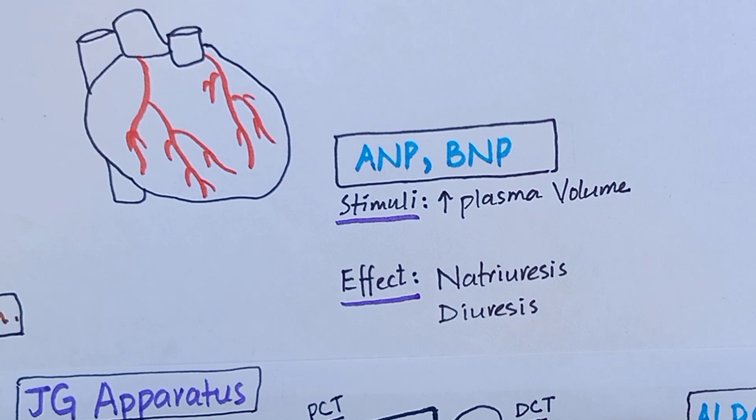These two cardiac peptides inhibit the whole renin-angiotensin-aldosterone system and promote natriuresis and diuresis, hence maintaining blood volume back towards normal.